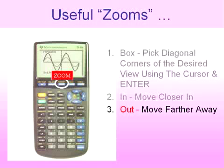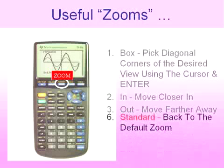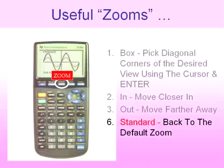And if you want to set it back to the way that it was before, number six is the zoom standard. And the standard window, if you would, goes from plus 10 to minus 10 for x and for plus 10 to minus 10 for y.